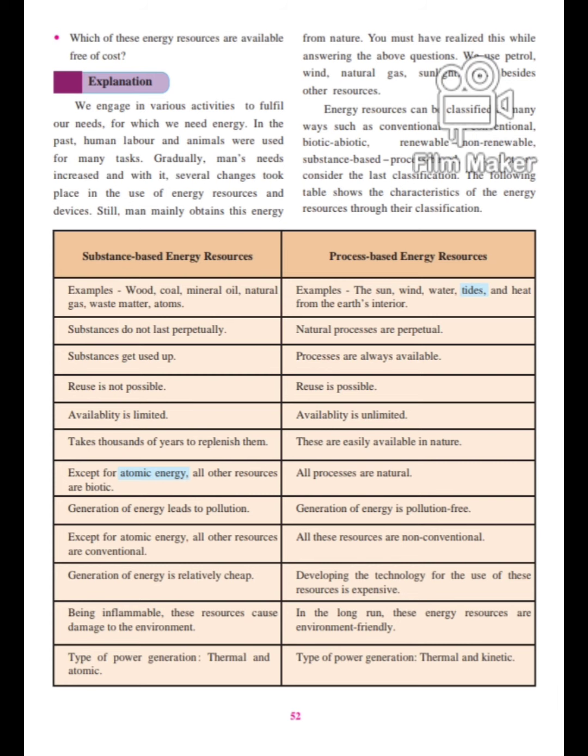Generation of energy from substance-based resources leads to pollution. If you burn coal, wood, or mineral oil, it pollutes the air. Except for atomic energy, all other resources are conventional resources — and you cannot reuse them. It takes many years for the formation of this conventional energy.